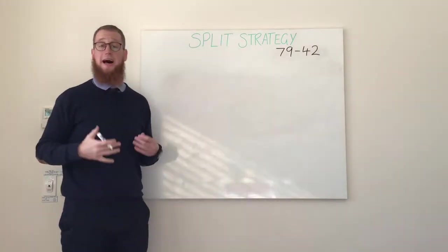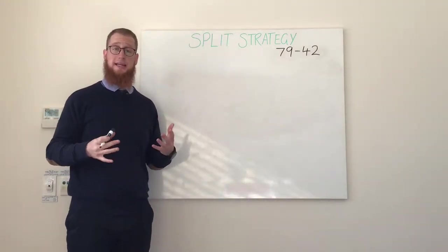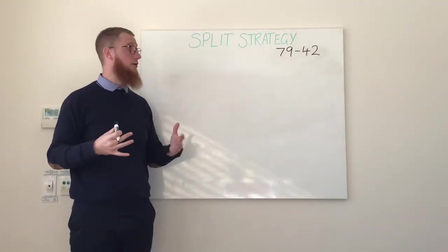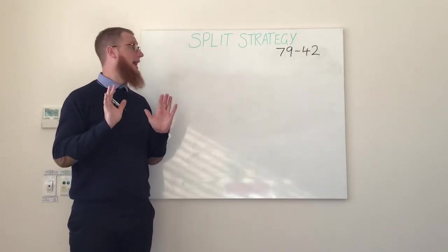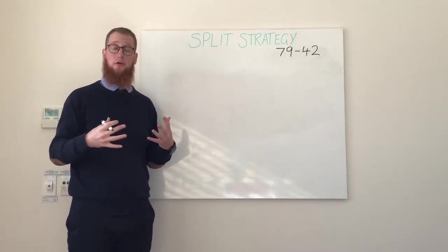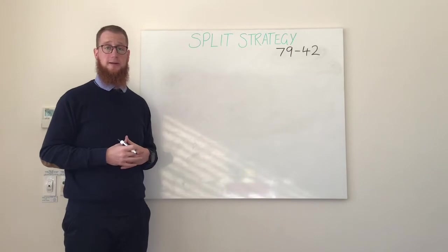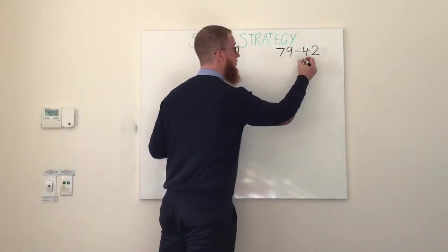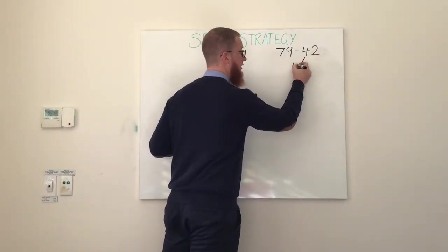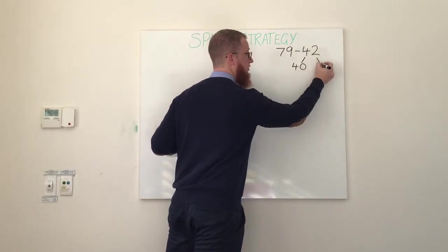Here we can identify our subtrahend, which is the number that we are going to be taking away, as our 42. Our next step therefore is to split that up into its place value parts. 42 can be shown as 4 lots of 10 and 2 lots of 1.